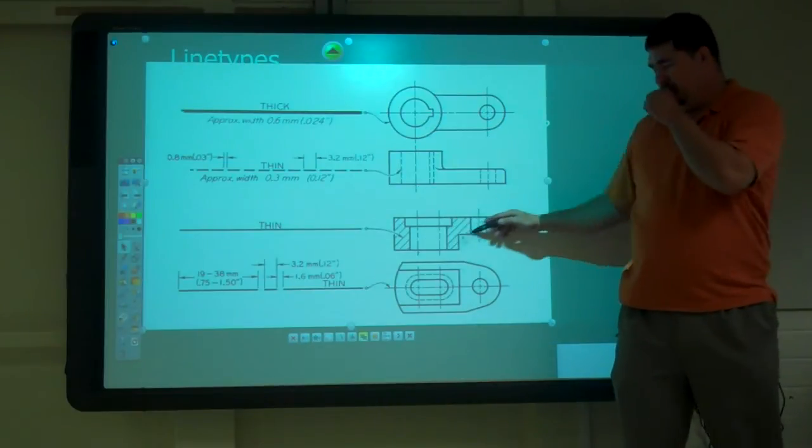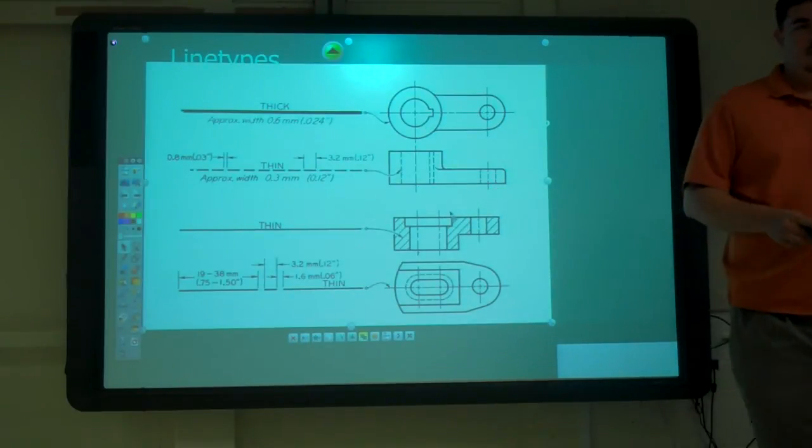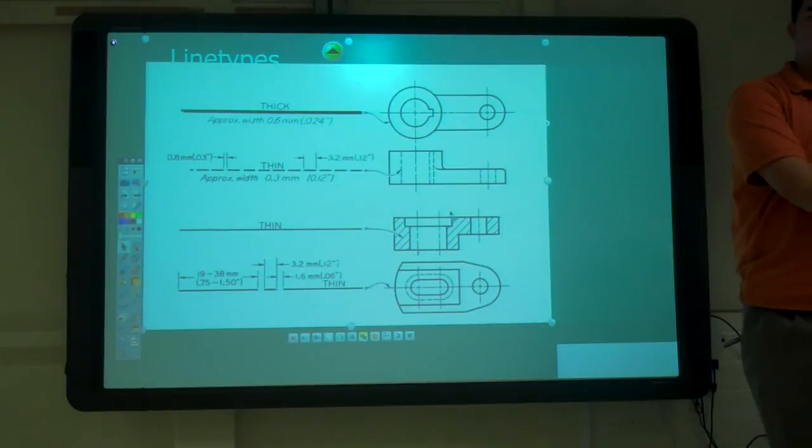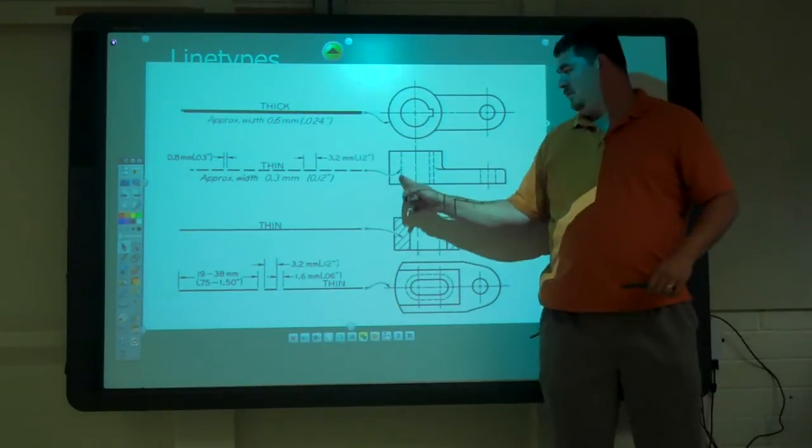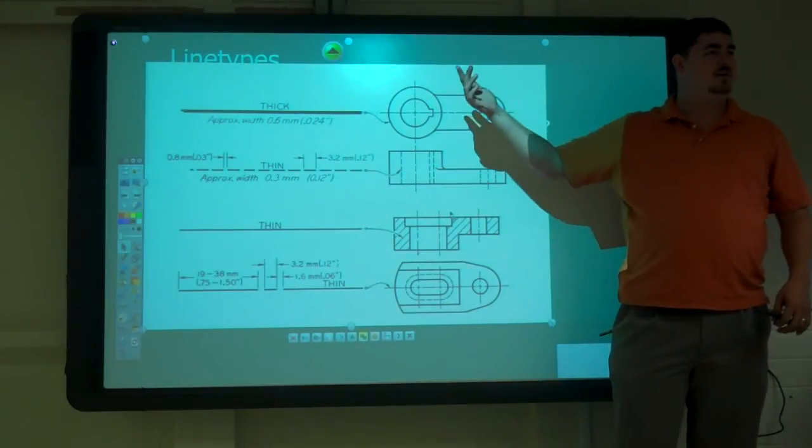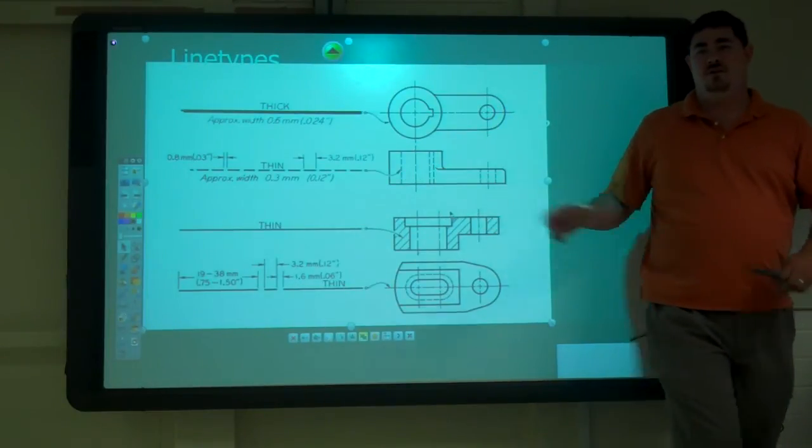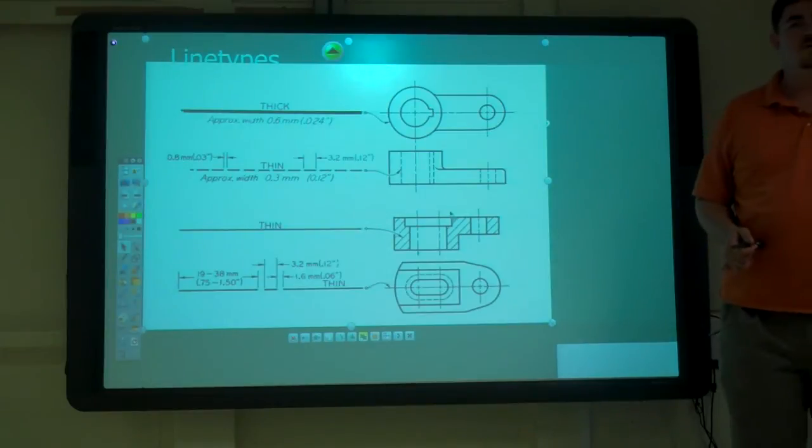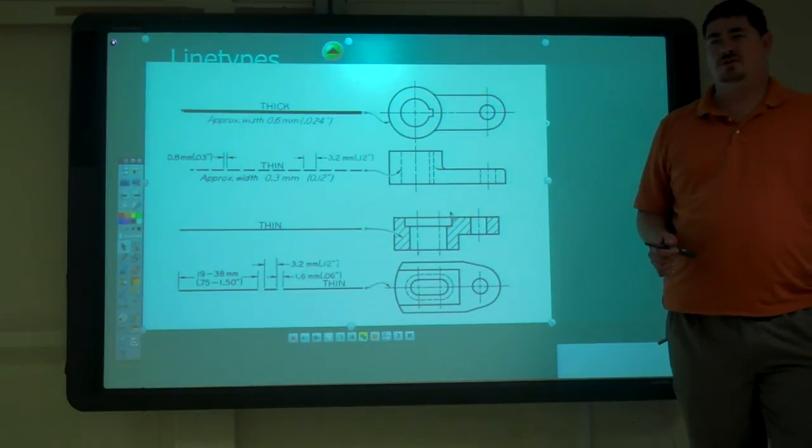We'll talk about these lines later. Right now, visible lines or object lines, that's our outside. Hidden lines, stuff that's on the inside or the back. And center lines, for the center of things. Questions?